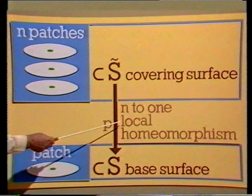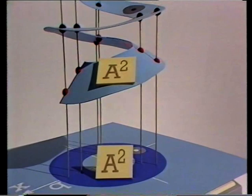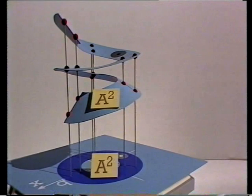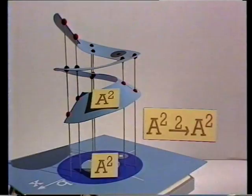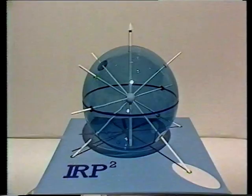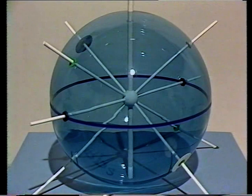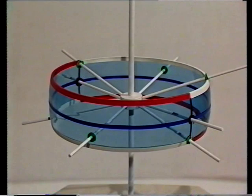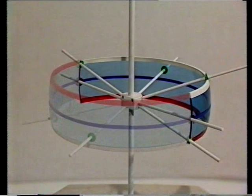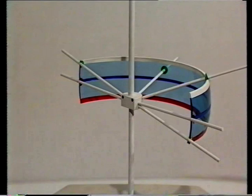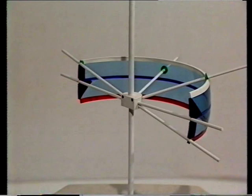We usually abbreviate all this by just writing the number n. So in our first example, we have an annulus A2 as a two-sheeted cover of another annulus. Similarly, for our second example, S2 is a two-sheeted covering surface of RP2. This example contains another example, because when we identify antipodal points on the sphere, a belt round the equator represents a Möbius band. That's because each point is represented twice, so we can discard the front half of the cylinder. The only remaining points to be identified are on the vertical edges, so we have to glue the edges with a half twist — and there's our Möbius band.